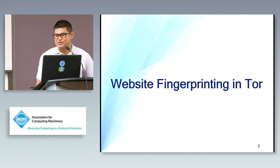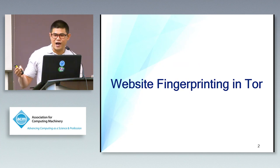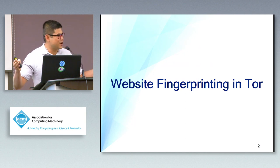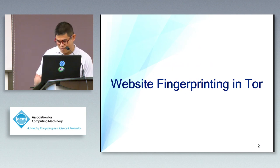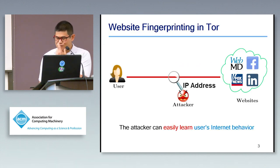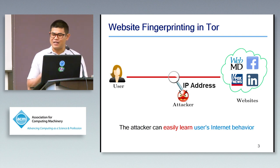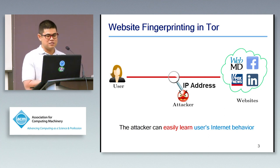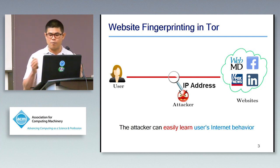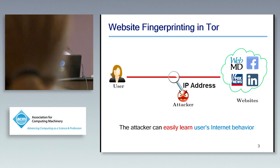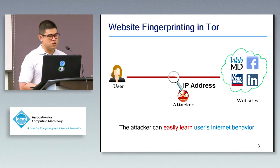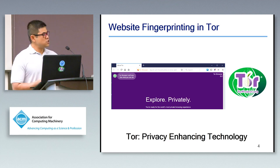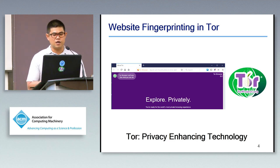First of all, I would like to ask a simple question: is there anyone in this room who believes that regular web browsing service can protect your privacy over the internet? Please raise your hand. Okay, so we are on the same page. Without good protection, an attacker can simply look at the IP addresses in your encrypted traffic and easily link your identity to the websites you are visiting. With this information, the attacker can learn a lot about your private life — for example, your personal preferences and your political viewpoints.